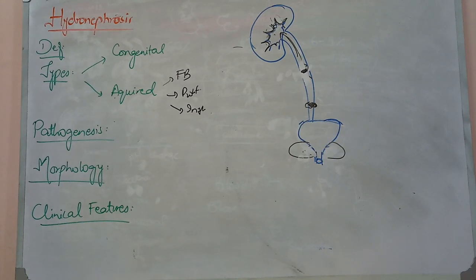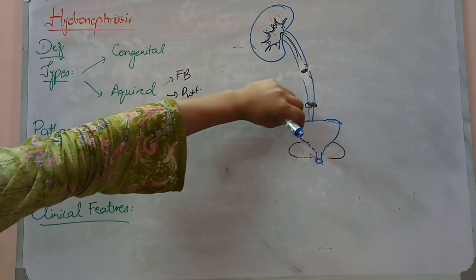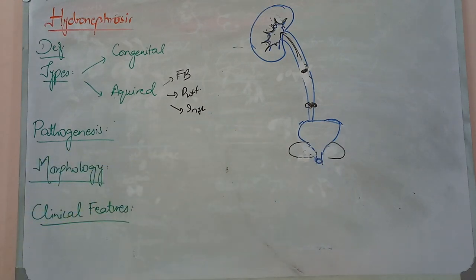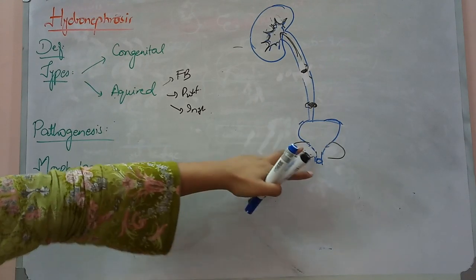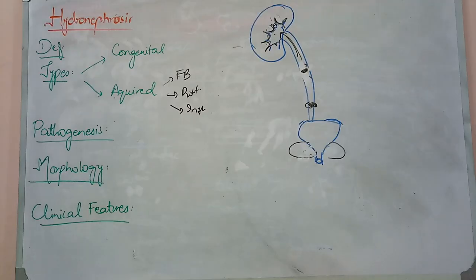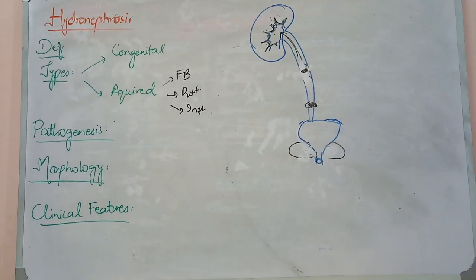Another condition is neurogenic bladder. If there is paralysis, a neurogenic bladder can develop. Normally the bladder contracts and relaxes a sphincter. In neurogenic bladder, the bladder becomes non-functional. When urine fills the bladder, backflow pressure increases and hydronephrosis will develop. Additionally, a normal pregnancy can cause mild pressure increase — this is a mild, acquired condition.